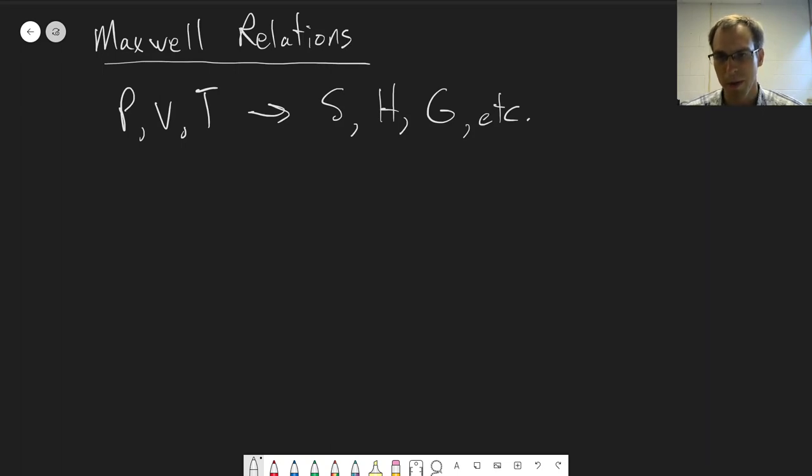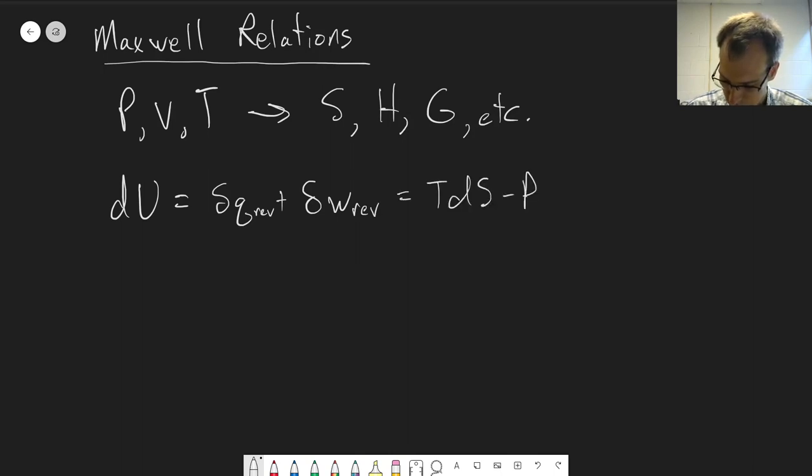So we're going to start with the first law of thermodynamics as an example. But these relationships can also be derived for many other state functions that we've talked about. So first we'll start with the first law. The first law, dU, is equal to dQ plus dW. But if we consider a reversible process, we can derive that this is equal to TdS minus PdV. So this is our first place we're going to start.